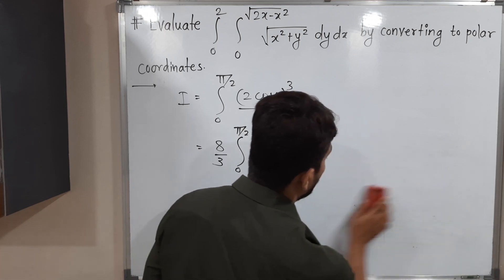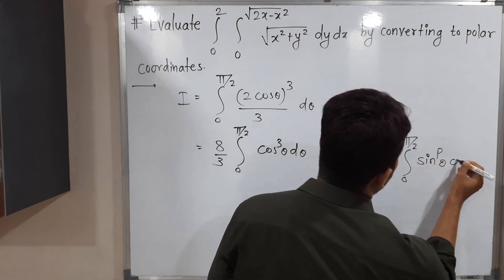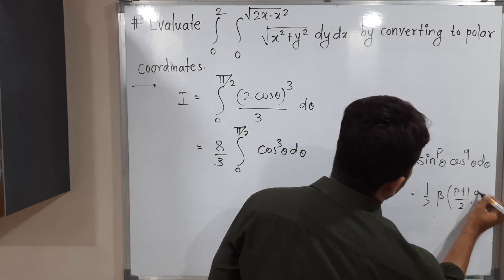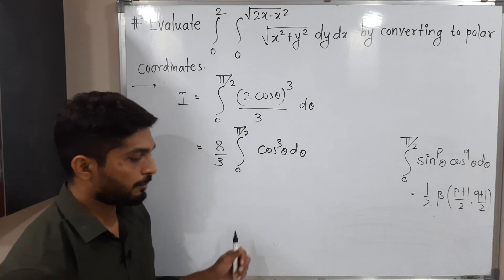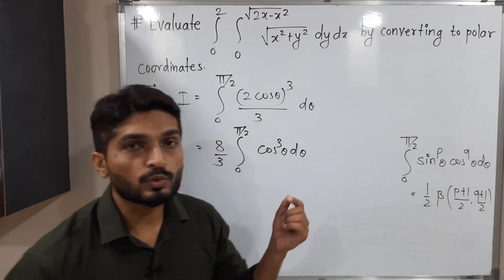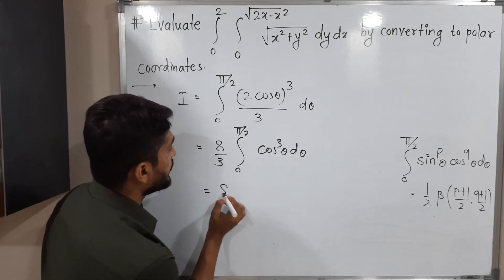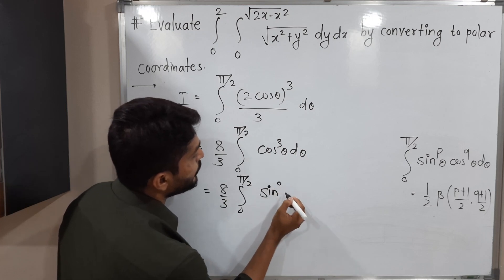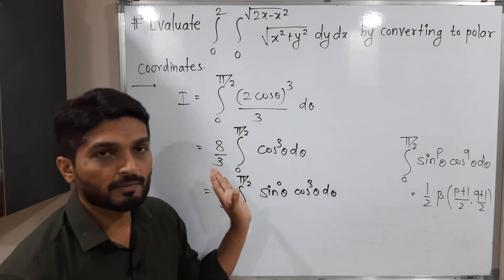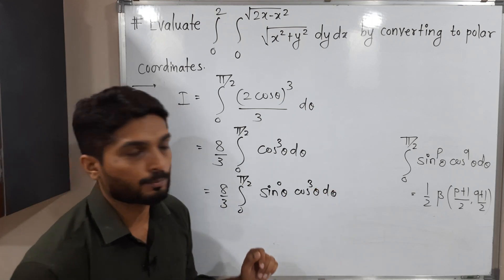The formula is: ∫₀^(π/2) sinᵖθ cosᵍθ dθ = (1/2) β((p+1)/2, (q+1)/2). We have cos³θ with no sine factor, so we write sin⁰θ cos³θ, giving p = 0 and q = 3.